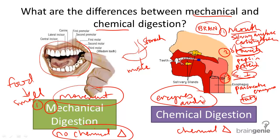As a unit, mechanical and chemical digestion work together to help us get the vital nutrients we need to survive.